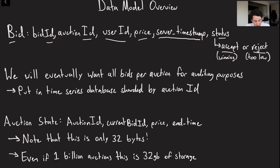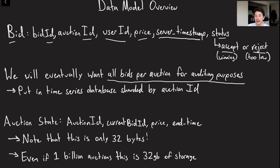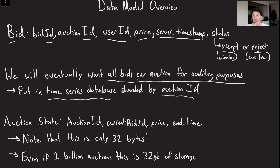It's important to have all the bids for a given auction available for auditing purposes. Sometimes the winner backs out and you need to give the item to the second-highest bidder, so storing just the final state isn't enough. We probably want a trail of all bids — especially in case we ever get investigated. This means we want all bids stored in a time series database, sharded by auction ID, sorted by timestamp.